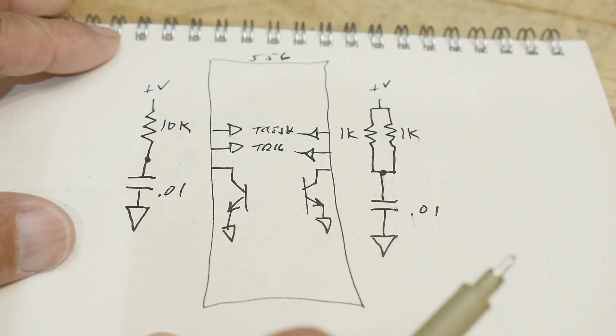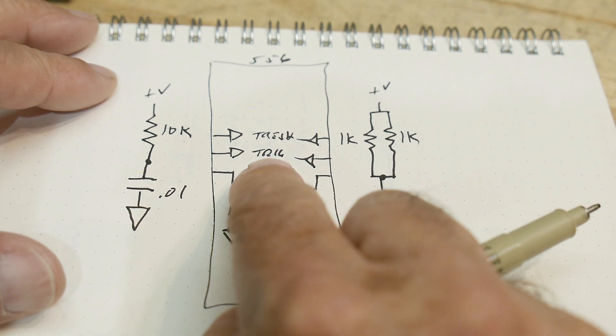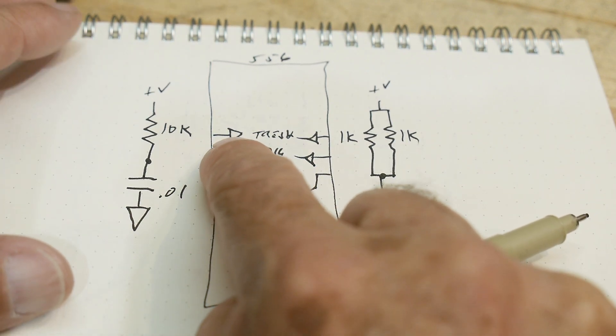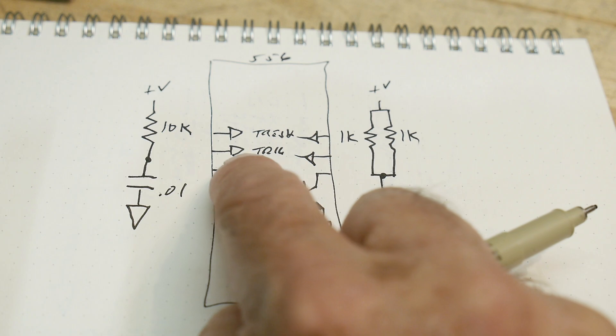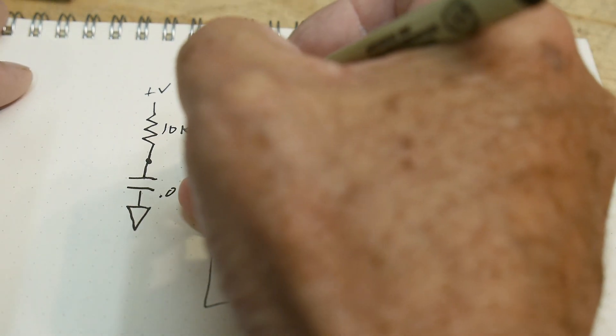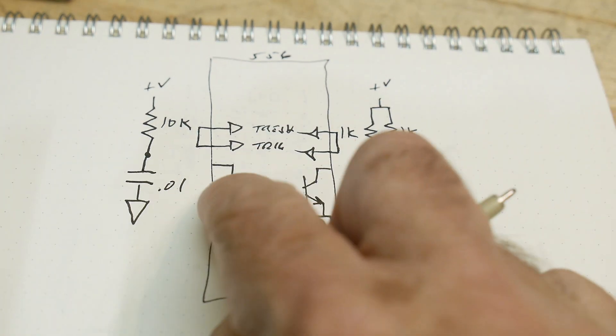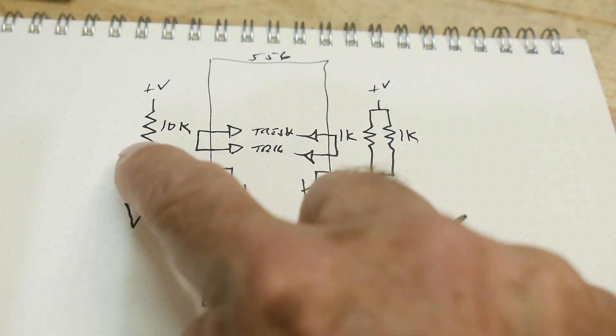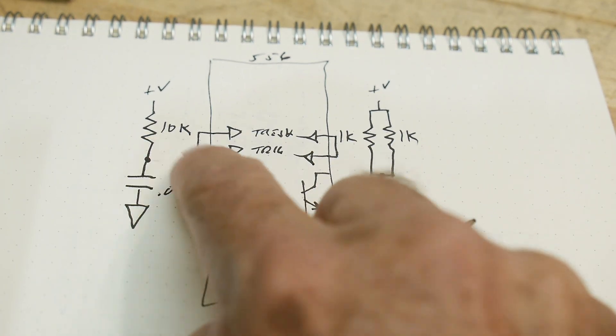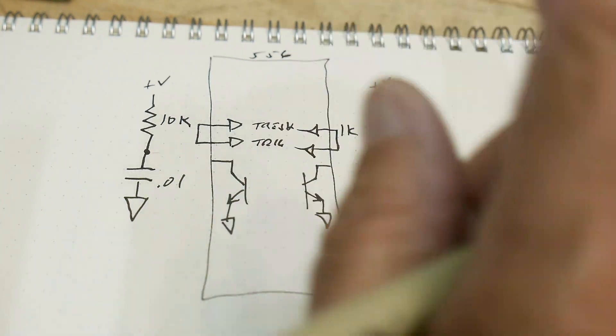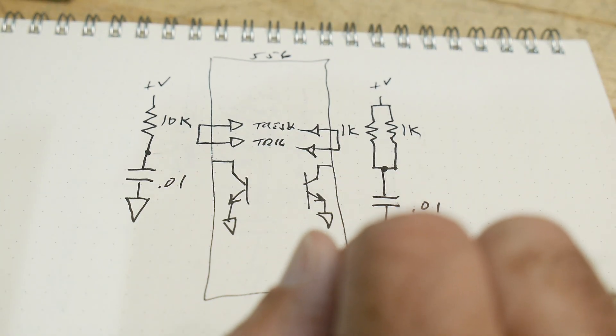These things basically work with a threshold and a trigger. There's two comparators: one comparator is at two-thirds the voltage and one comparator is at one-third of the voltage. The way that you generally hook these things up is just hook them together, so when it's high it'll trigger on the two-thirds, when it's low it'll trigger on the one-third.